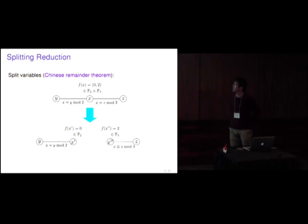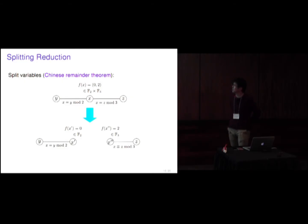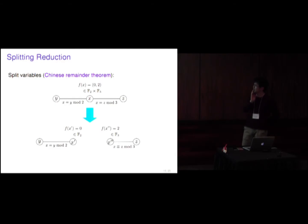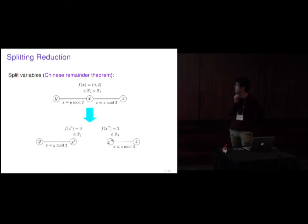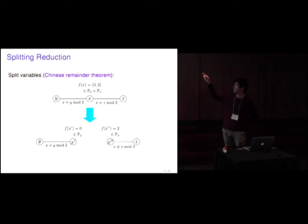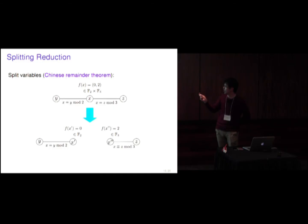The second reduction is splitting reduction. Starting from the reduced instance, we can further reduce by splitting variable X into X-prime and X-double-prime, keeping the constraints the same. The key point is that if we can get a satisfying assignment for the split instance, we can get one for the original. This is because the Chinese Remainder Theorem holds for arithmetic CSPs — that is the reason we can apply this splitting reduction.